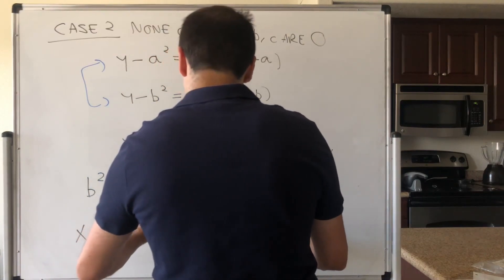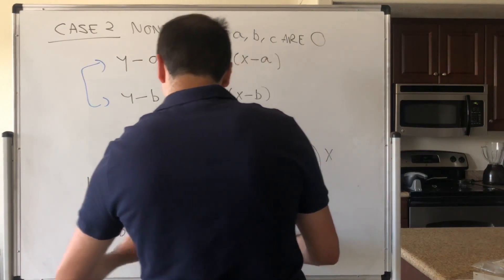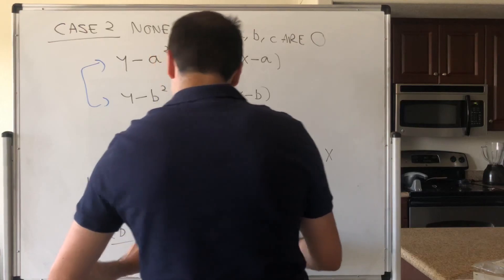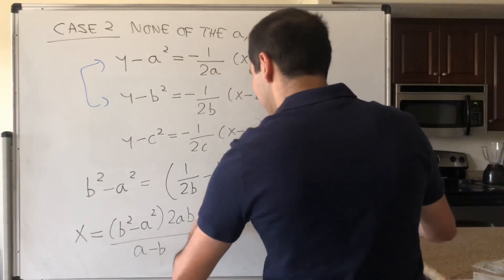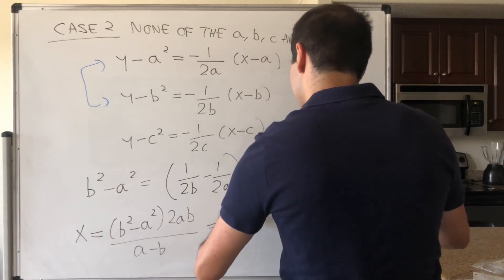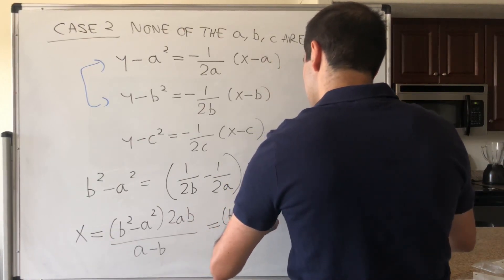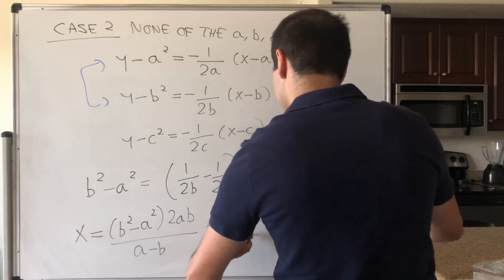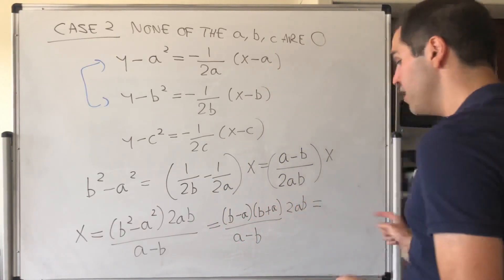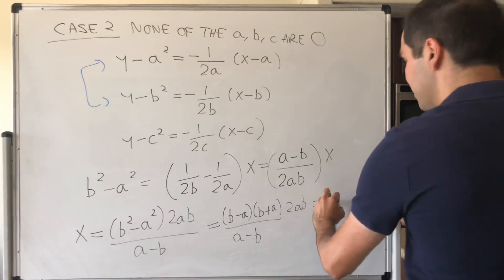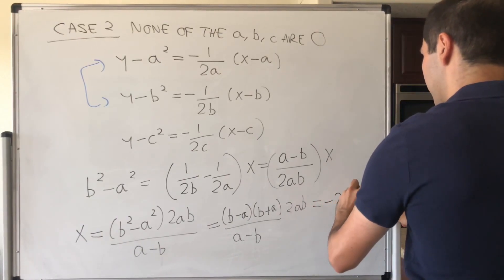times x. And then what you can do, you can simply solve for x. So x equals b squared minus a squared times 2ab over a minus b. But remember, b squared minus a squared, it's b minus a, times b plus a, over a minus b, times 2ab, which in the end simplifies simply to minus 2ab times a plus b.